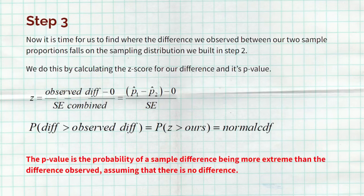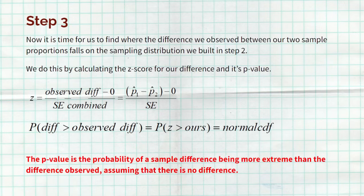Step three: build the sampling distribution, find the test statistic (the Z-score), and find the p-value. Take the observed difference between the two sample proportions, subtract zero (the null assumption), and divide by the standard error combined. Then find the p-value — the probability that any other difference would be more extreme than the one we observed — using your normal table or normal CDF.